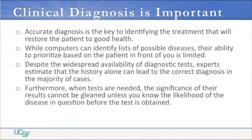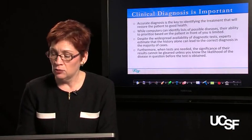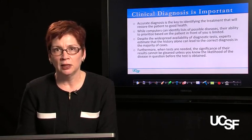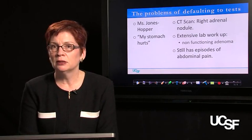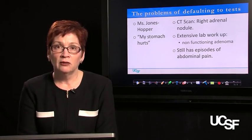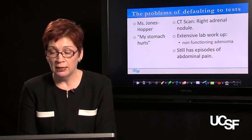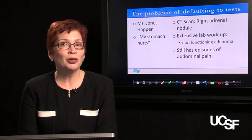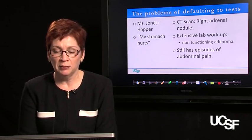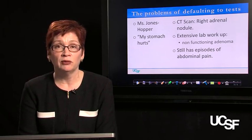Even when tests are needed, the significance of their results cannot be understood unless you know how likely the disease in question is present before you obtain the test. For example, Mrs. Jones-Hoppers, the 35-year-old with recurrent stomach pain — the first physician obtained a CT scan showing a right adrenal nodule. After extensive workup, this was a non-functioning adenoma requiring no treatment, and we were no closer to understanding her abdominal pain, yet had spent significant money and time on a test not indicated by her history and physical.